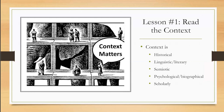The first is context. Context matters. There's an elephant in the living room, and we saw just this afternoon in Alex McNeil's really impressive summary of why there's an authorship question, a little bit about that elephant. When I say context, I mean all the things that you see on this slide: historical, linguistic, and literary, semiotic, psychological or biographical, and also scholarly.